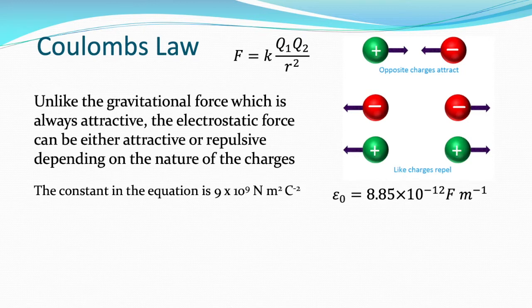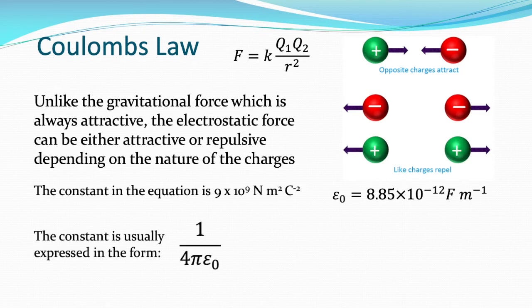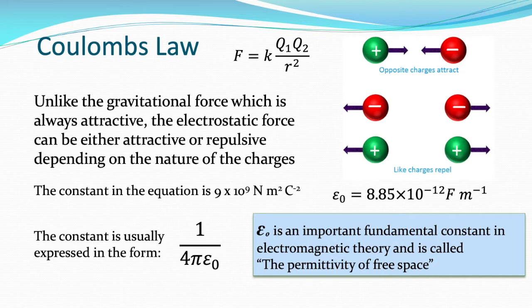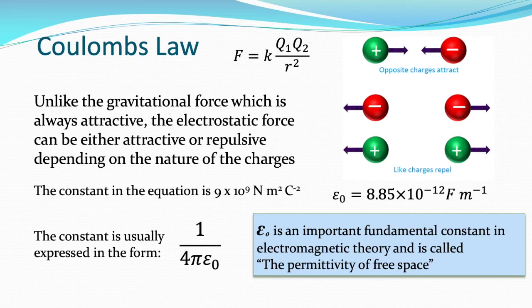You won't find that constant on your datasheet. What you will find is a constant called the permittivity of free space, ε₀. It's an important fundamental constant in electromagnetic theory — it describes how easy it is for that electric force to be transferred through the vacuum of free space. ε₀ on your datasheet is 8.85 times 10 to the minus 12 farads per metre. If you do 1 divided by 4 times pi times ε₀ on your calculator, you get a number equal to 9 times 10 to the 9.